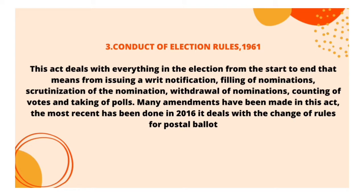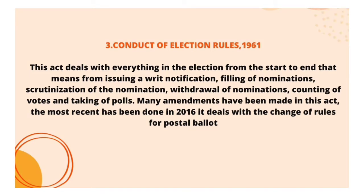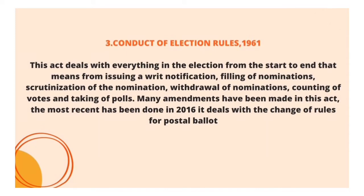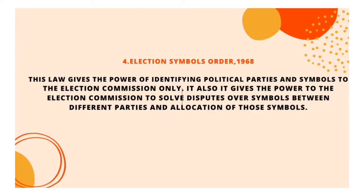The Conduct of Election Rules 1961 deals with everything in the election from start to end — from the issuing of a written notification, filing of nomination, scrutinization of nominations, withdrawal of nominations, counting of votes, and taking of polls. Many amendments have been made to this act, the most recent in 2016 dealing with changes to rules for the postal ballot.